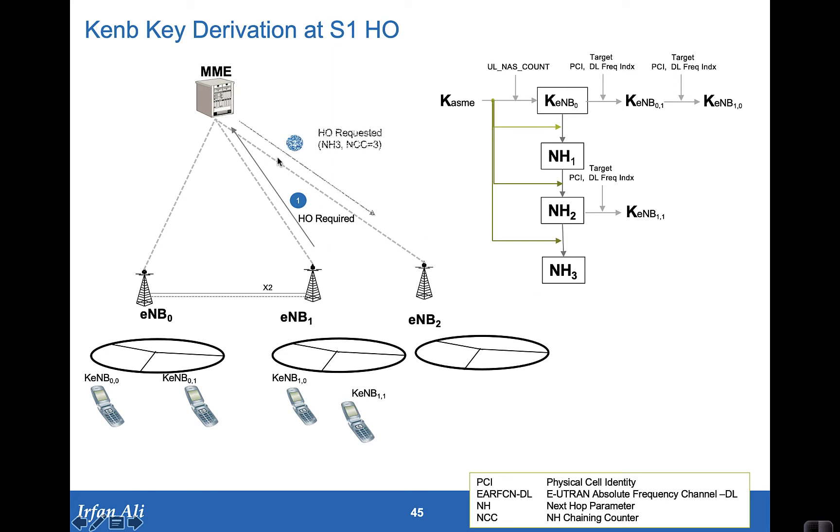And in the handover request command, it provides this tuple NH3 and NCC set to 3 to the E-node B2. This is a new pair that has come in to the E-node B.